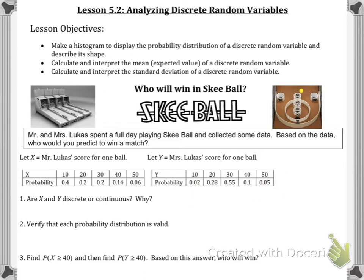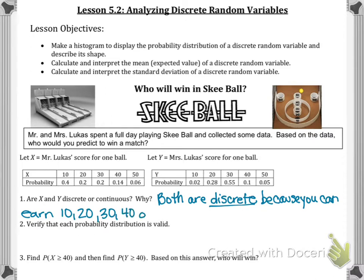So are these discrete or continuous random variables? In this case we have a pair of discrete random variables, noticing that there are only certain values that our variables can take on with no values in between. We'd say both are discrete because you can earn 10, 20, 30, 40, or 50 points with no values in between those particular values.